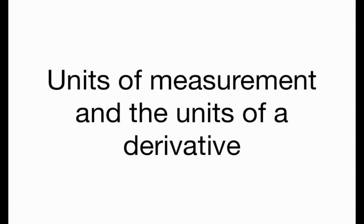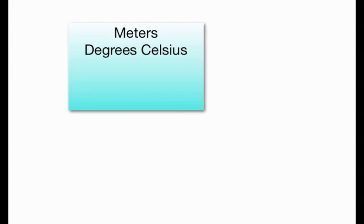A unit of measurement is just a definite way that we measure a quantity, usually with a specific name attached to how we're measuring things. For example, we use meters to measure distance, degrees Celsius for temperature, dollars for money, seconds for time, people for crowd size, and so forth.